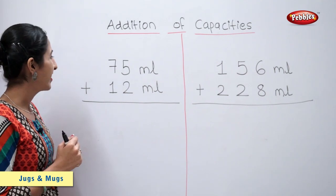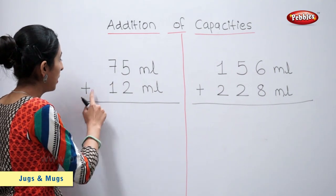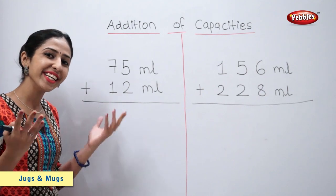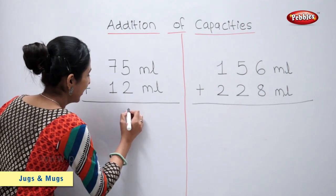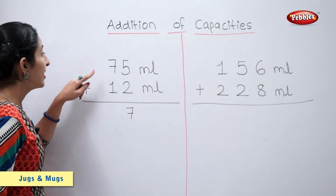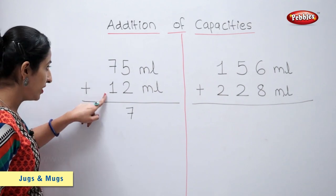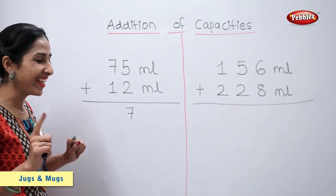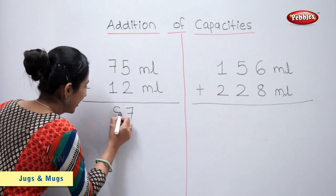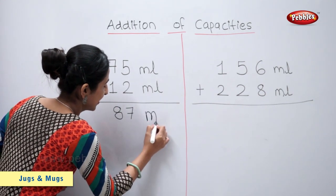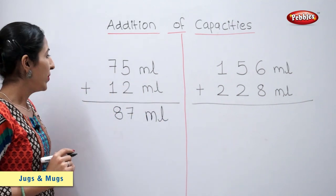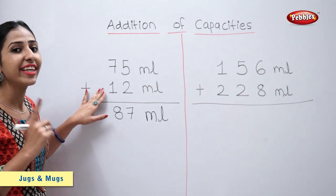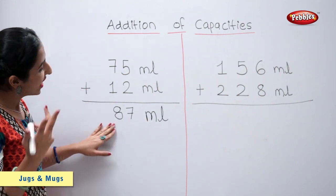75 ml plus 12 ml is equal to how much? Let's find out. 5 plus 2 is equal to 7. 7 plus 1 is equal to 8. So, 75 ml plus 12 ml is equal to 87 ml.